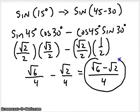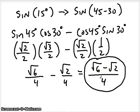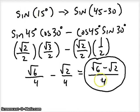When using sum and difference formulas, you're going to get answers that look very similar every time — that's just the nature of these formulas. The sine of 15 degrees would be a decimal value equivalent to this ratio, and you can use your calculator to prove that.